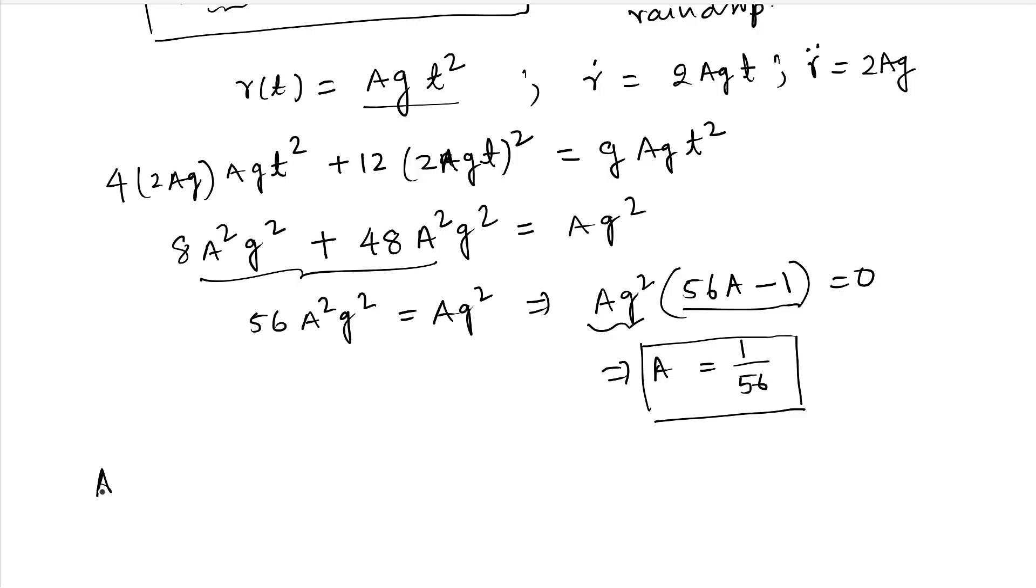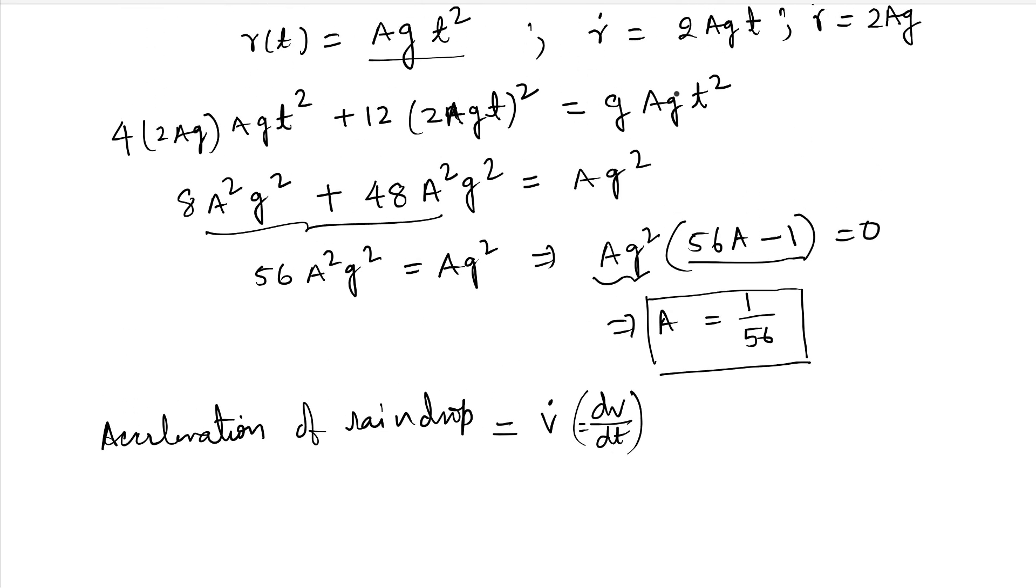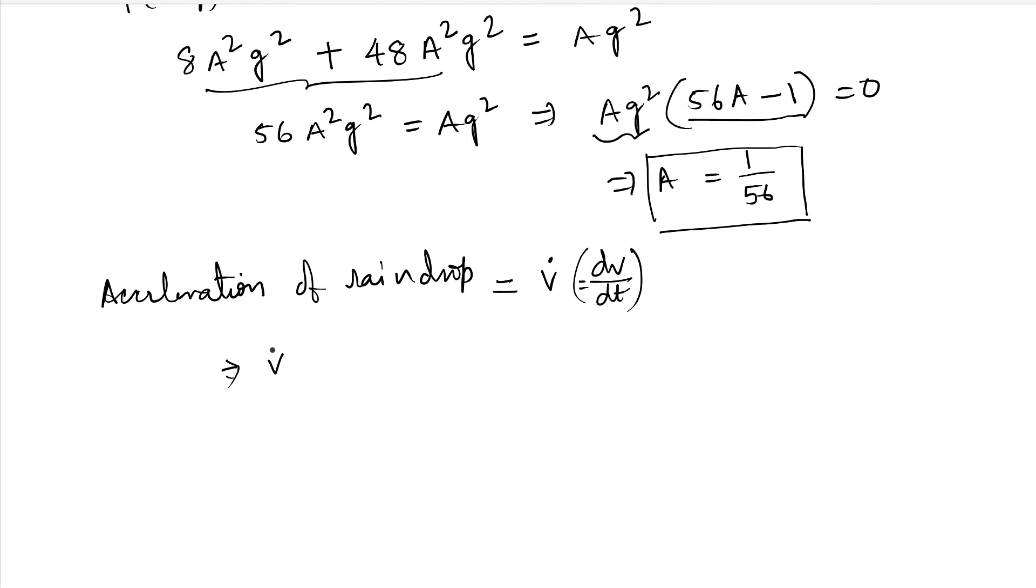Now acceleration, that's what we need to find, of raindrop, is equal to v dot, which is dv by dt. And v dot is this, 4r double dot. V dot is 4r double dot, which is 4 times 2 a g. Because r is a g t square. And therefore, this is 8 into 1 by 56 g, therefore, v dot is g by 7.